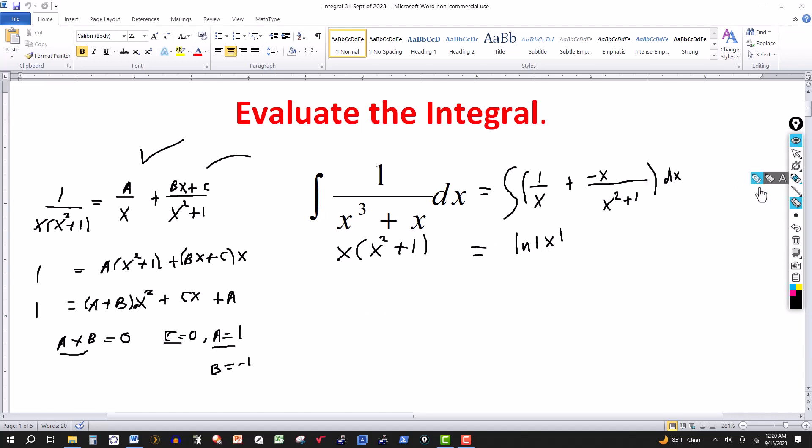And then for this one here, notice the derivative of x squared plus 1 is 2x. So I have minus x. This would tell me that the integral of this would have to be minus 1 half natural log of absolute x squared plus 1. But x squared plus 1 can never be negative, so I don't need the absolute values there.